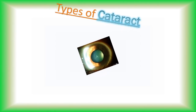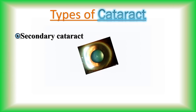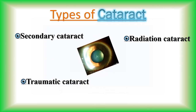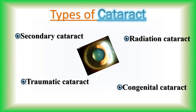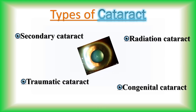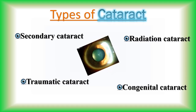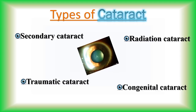While most cataracts are related to age, there are also other types of cataract. In the case of secondary cataract, cataract results from another health issue such as surgery or diabetes. Cataracts can also develop from exposure to radiation, or after an eye injury, sometimes years later. In some cases a person is born with cataract or develops it in childhood, often in both eyes.